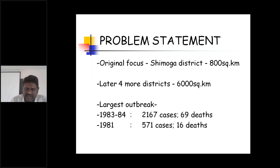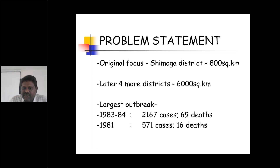This disease is infecting a large number of people. In 1983–84, 2,167 people were infected. In 1981, 571 cases were reported and 16 deaths occurred among those 571 cases.